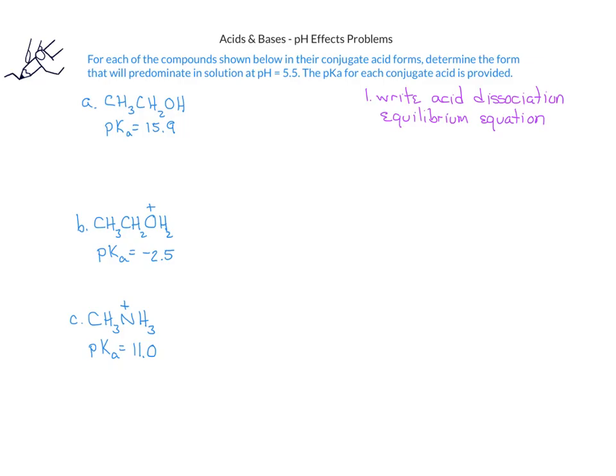Once we've done this, we'll compare the pH of the solution, which in this problem is 5.5, to the pKa of the given compound. If the pH is less than the pKa of the compound, then we'll determine that the conjugate acid form will predominate.